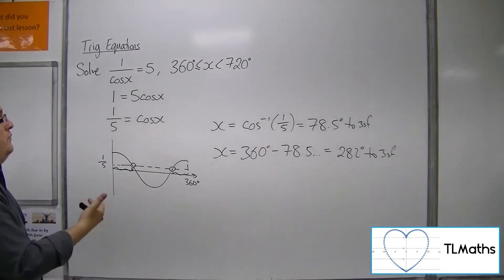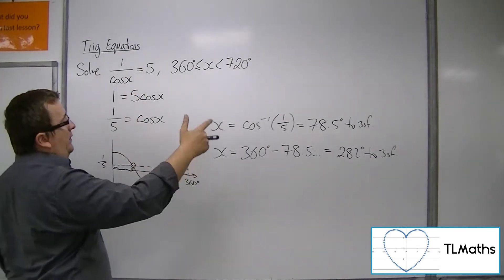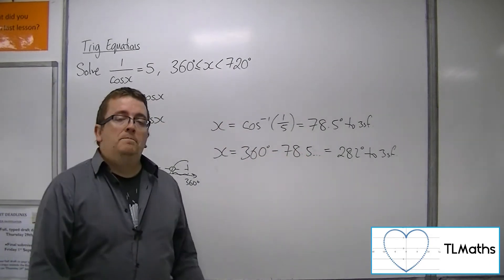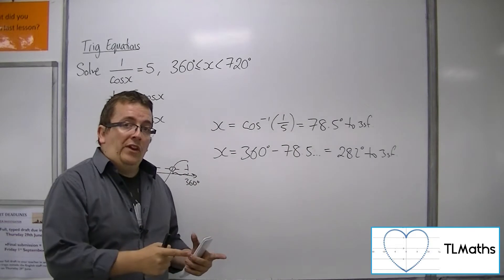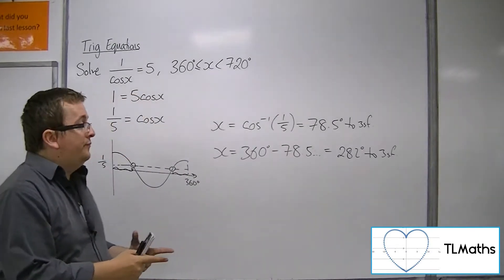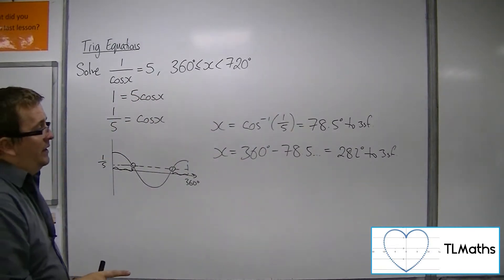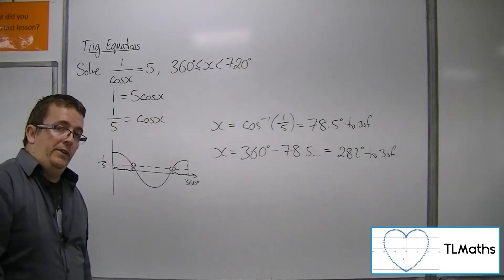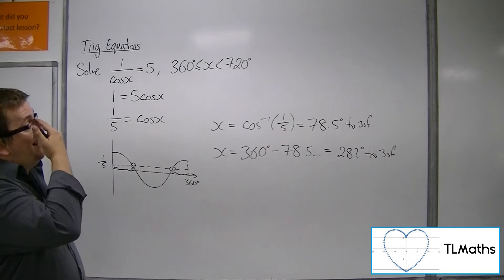Now I would have gone all the way through this same process to get to the 78.5 and the 282 degrees, in exactly the same way in order to solve this problem. The only difference is that neither of these are solutions that I want, because neither are between 360 and 720.